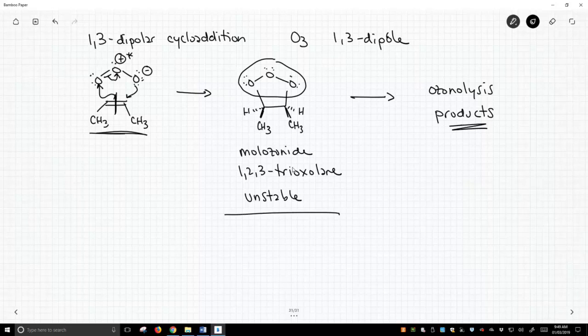Regardless, it does form, and we make this five-membered ring. And this arises from a cycloaddition. It is a 1,3-dipolar cycloaddition, and ozone is the 1,3-dipole that undergoes this process.